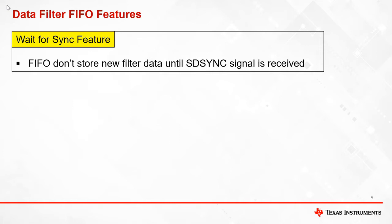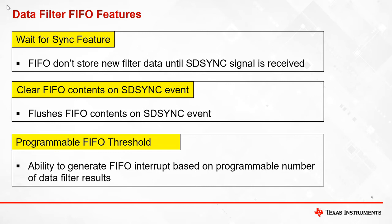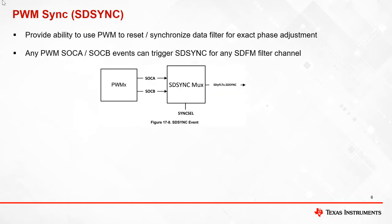Let's look at some of the data FIFO features. The wait for sync feature allows the user to ignore new filter data until an SD sync event is received from PWM. The clear FIFO contents on SD sync feature allows the user to automatically clear FIFO contents on an SD sync event. The programmable FIFO threshold feature allows the user to generate a FIFO interrupt only after it receives a programmable number of data filter results. The SD sync event from PWM resets the OSR counter in the data filter and facilitates exact phase adjustment of the data filter with respect to the PWM cycle.